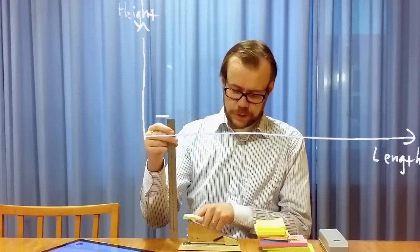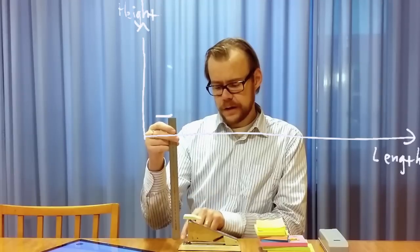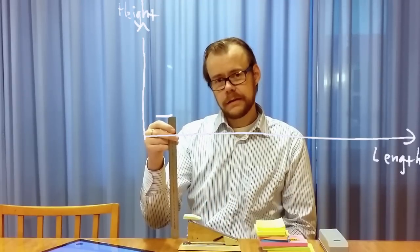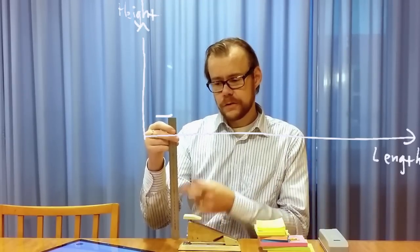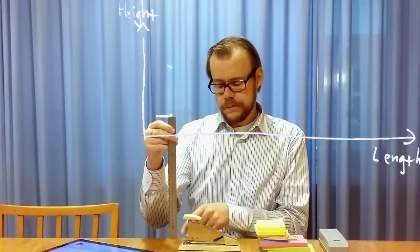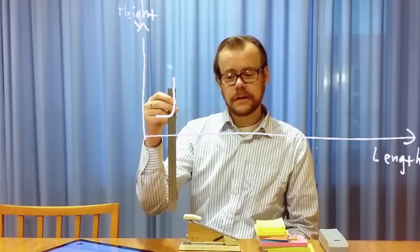And the probe approaches the first object here. Then it starts to send the tunneling current from this side, and then the current will increase. And that will mean that the control loop that controls the distance between the tip and the sample will change its position. So it will withdraw to decrease the current.